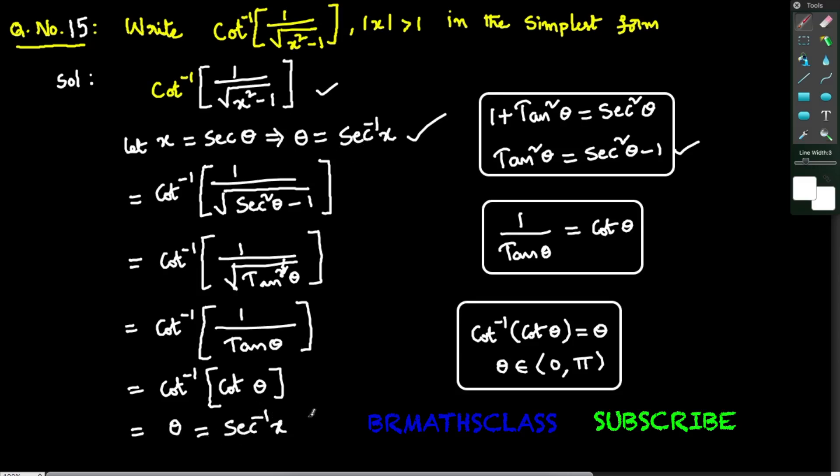Since we took x as secant theta, we have theta equals secant inverse x. Therefore, the simplest form of cot inverse of 1 divided by square root of x squared minus 1 is secant inverse x. I hope you understand this class. If you like this video, please press the like button, share it with your friends, and subscribe to my channel. Thanks for watching, bye bye.